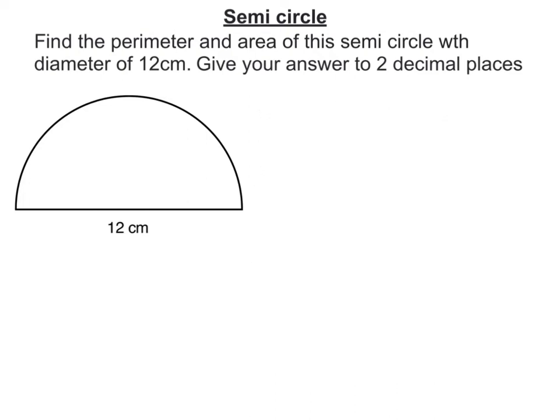Now let's work out the area of this shape. Well, this area is just half of a circle. And the area formula for a circle is pi r squared. I only want half of it, so I'm going to divide that by 2.